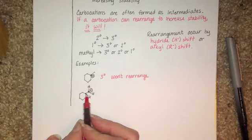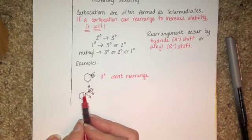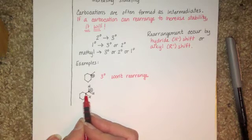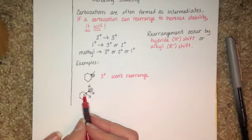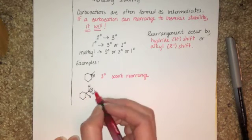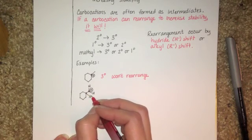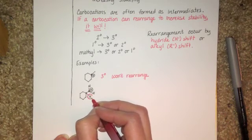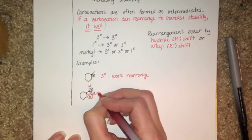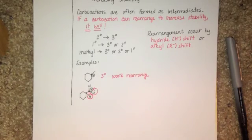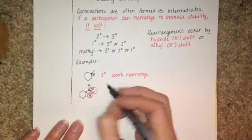And you want to ask yourself, is there a hydrogen atom on this adjacent carbon that I can move over to the positively charged carbon? Or is there an alkyl group that I can move over? In this particular compound, we've got this hydrogen atom right here that can be moved and will be moved from its position over to the positively charged carbon.